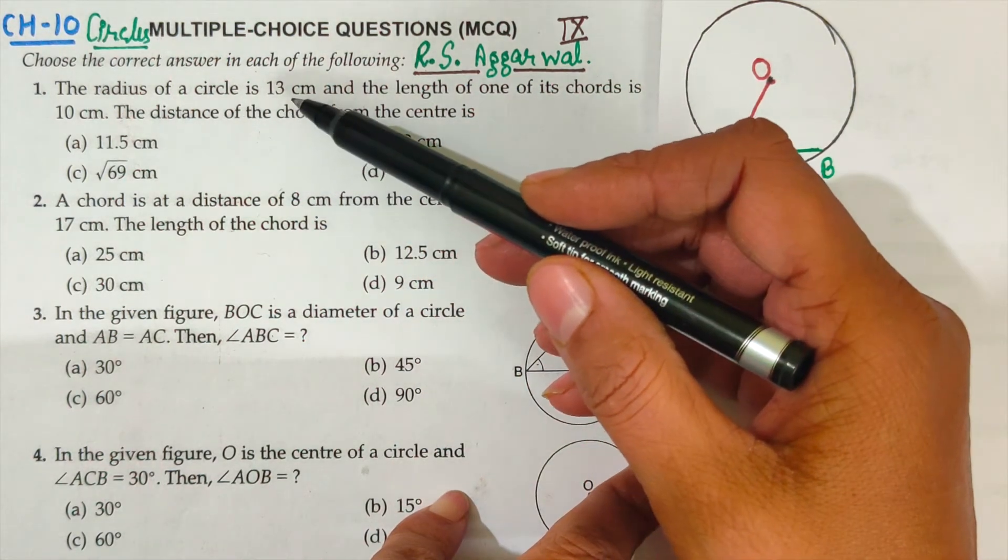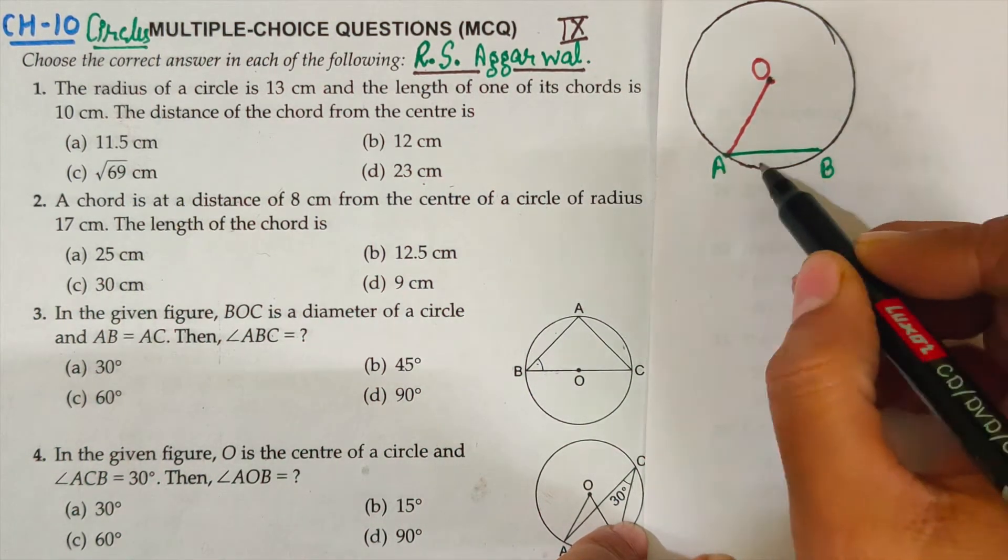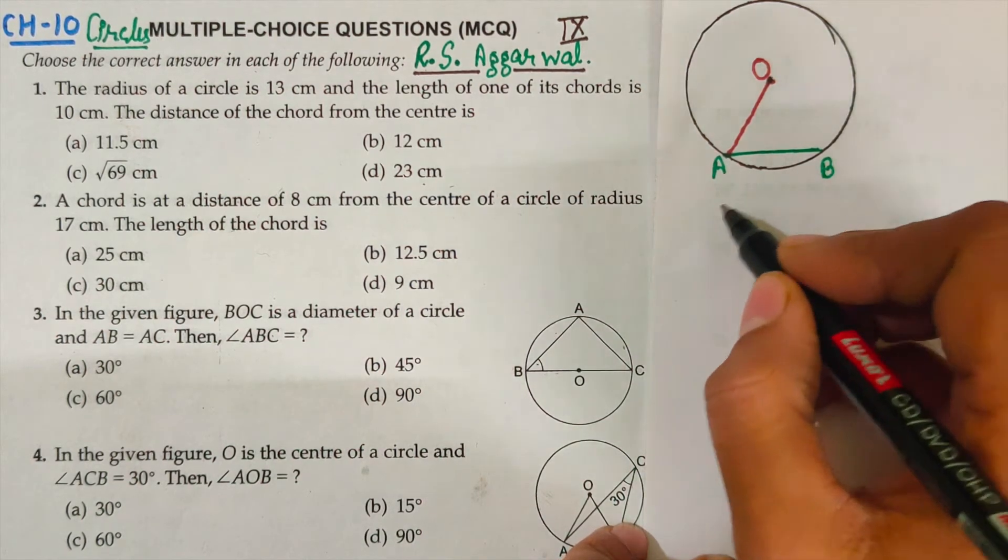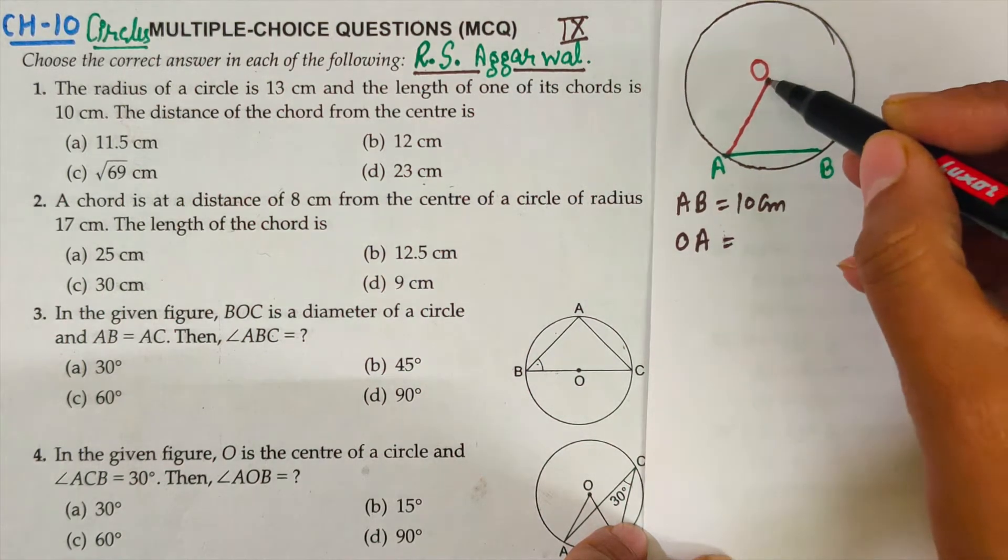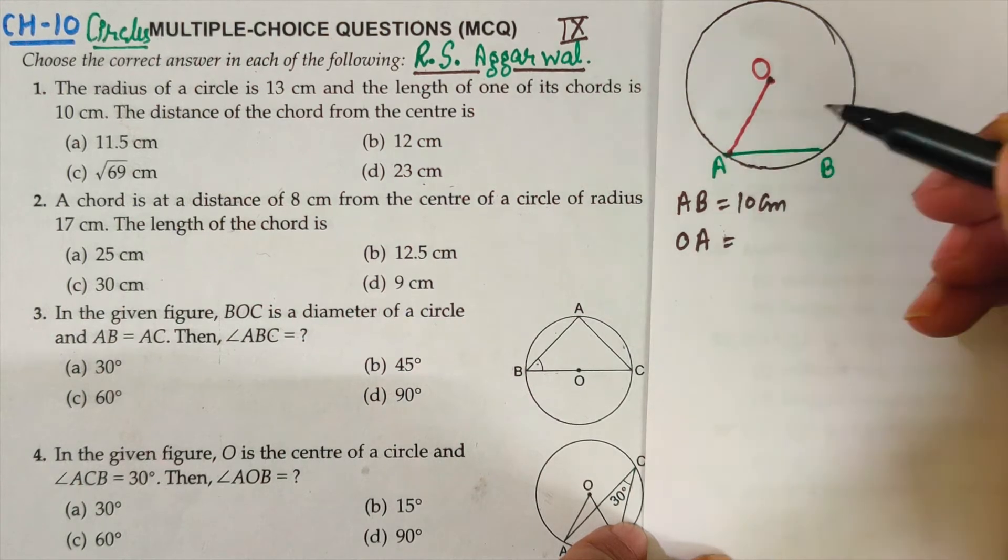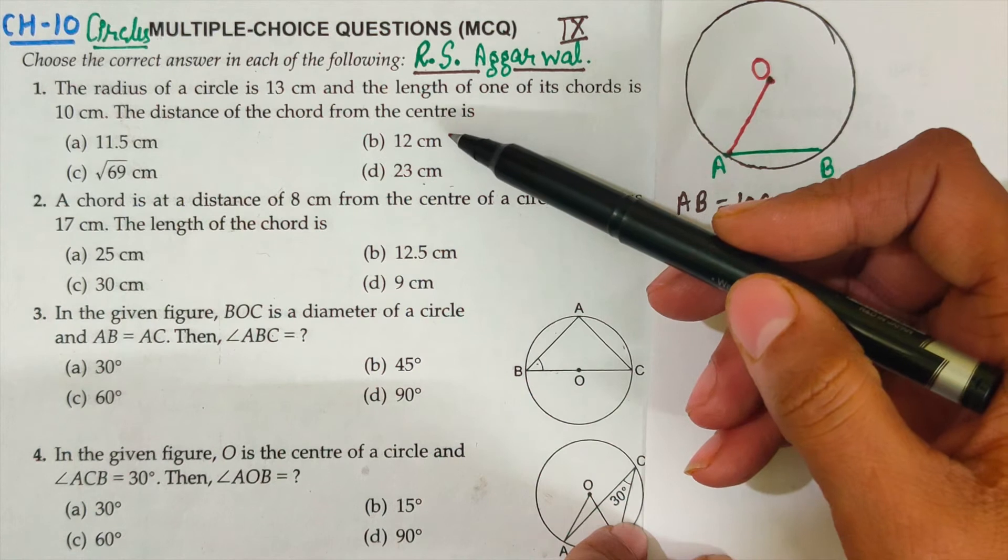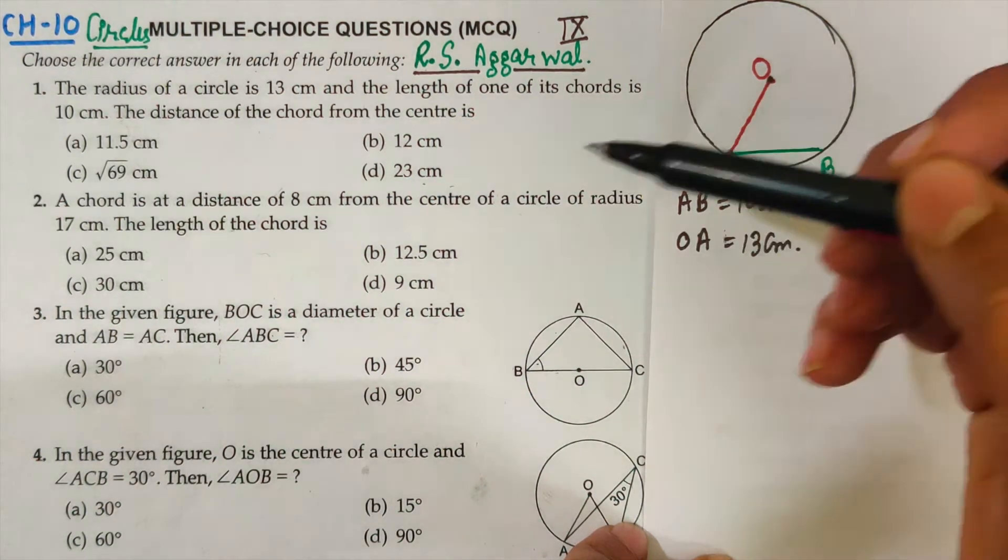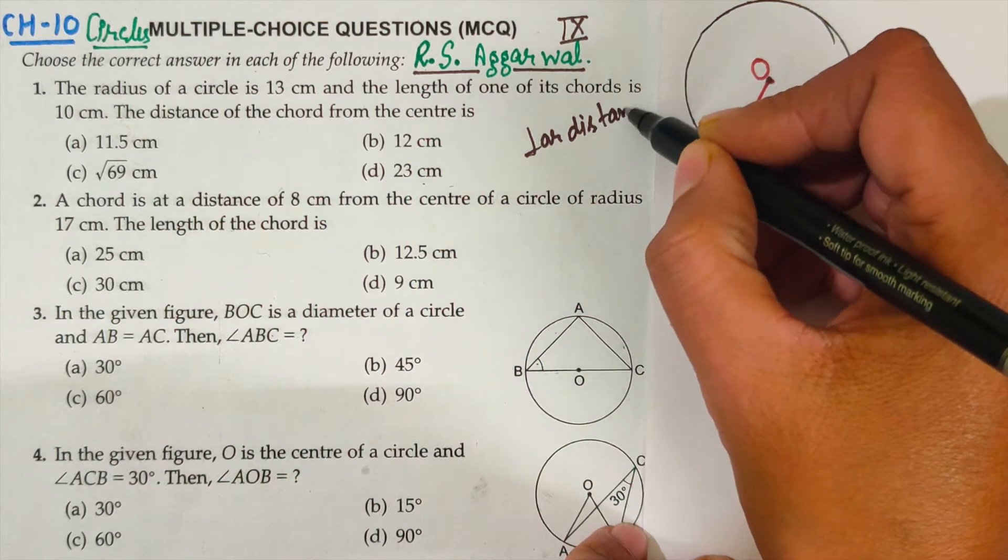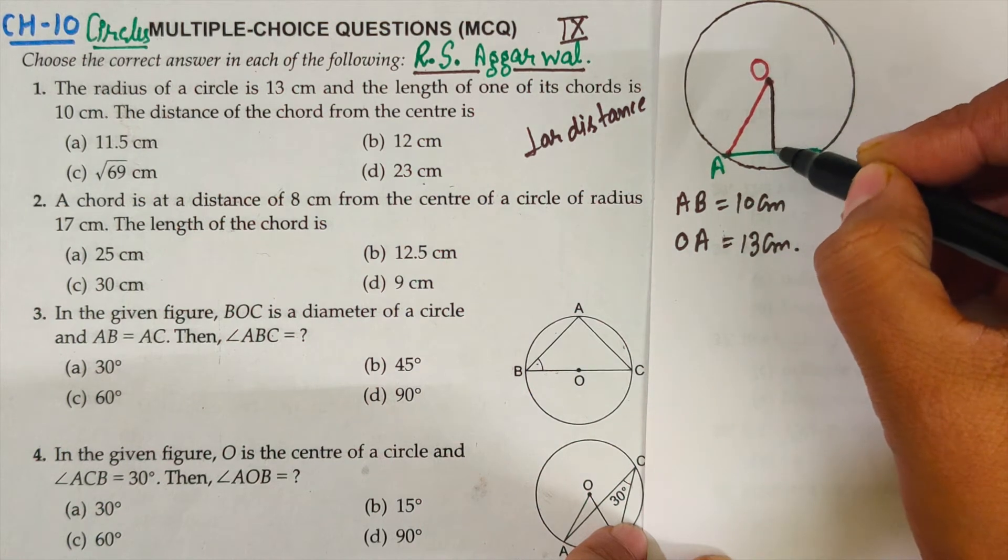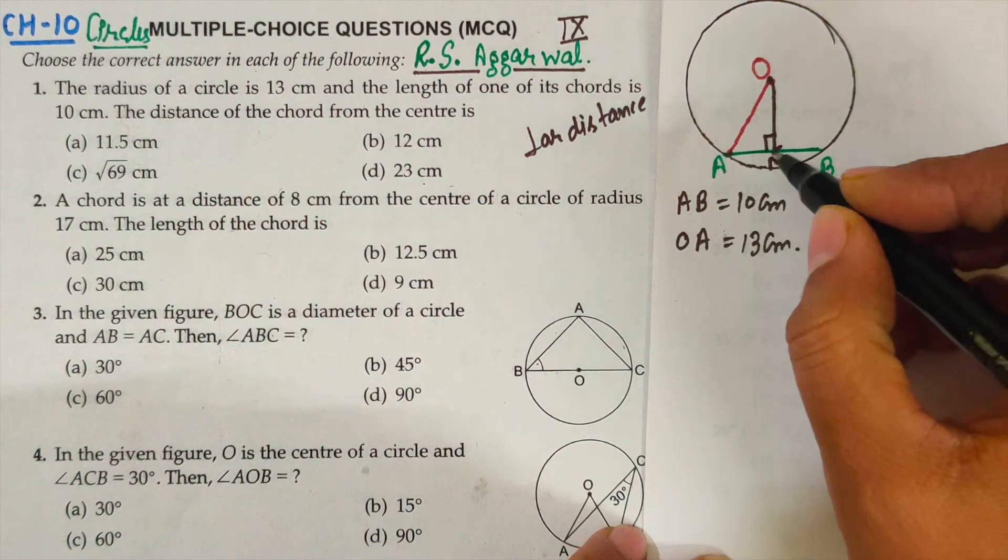In this question the radius of the circle is 13 cm and the length of one of its chord, we call chord AB, so its length is 10 cm. So let me write the details here. AB is 10 cm and radius from center to the boundary is 13 cm. Now the question is find the distance of the chord from the center. Whenever you have to calculate distance, it is understood that we have to calculate perpendicular distance.